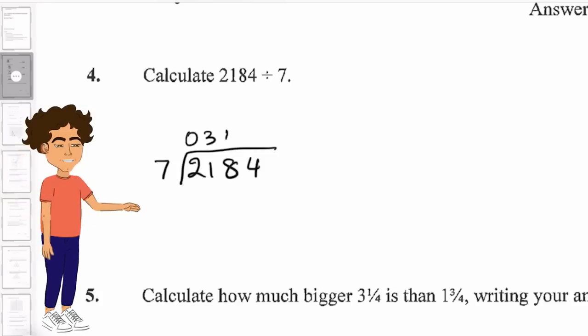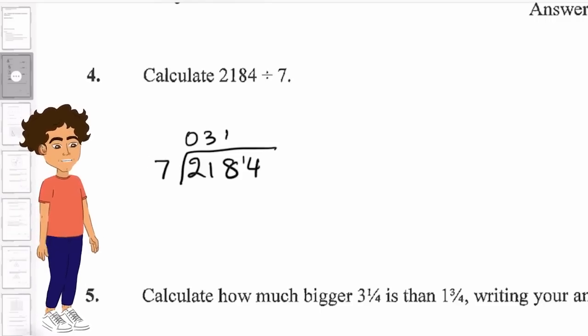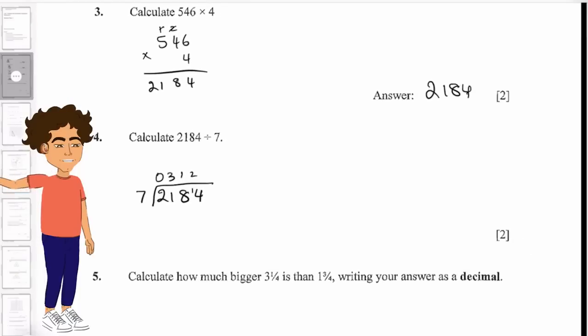We then know that 7 goes into 8 once with a remainder of 1. We can put the 1 in front of the 4. And then 7 goes into 14 twice. And there we have it 312 as our answer.